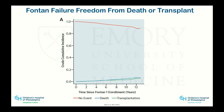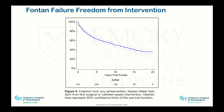Looking at our single ventricle population — this is the population where we really started. Fontan patients essentially live with chronic right heart failure their entire lives. We had some patients with bad lymphatic dysfunction — plastic bronchitis — and that's how we got interested. The good thing about these right heart failure patients is that they live longer, but they all get sick, all get end-organ dysfunction. In many cases their cardiovascular function looks fine, but things fall apart.